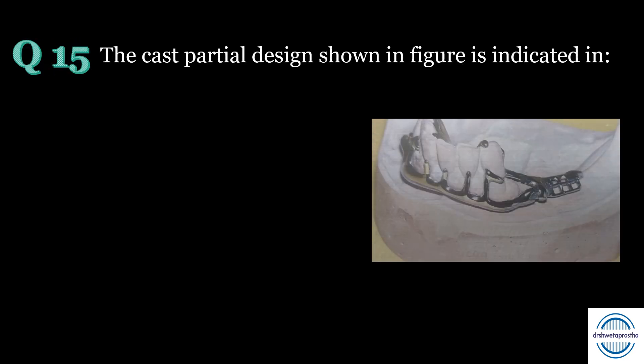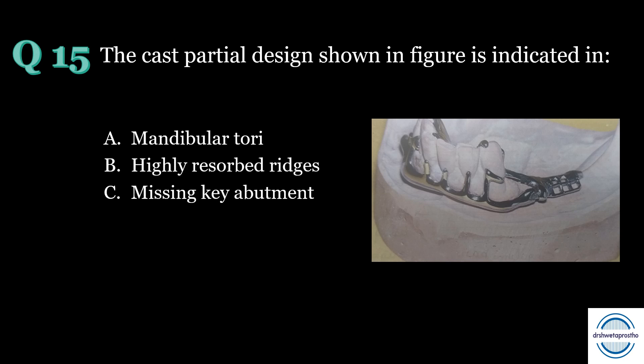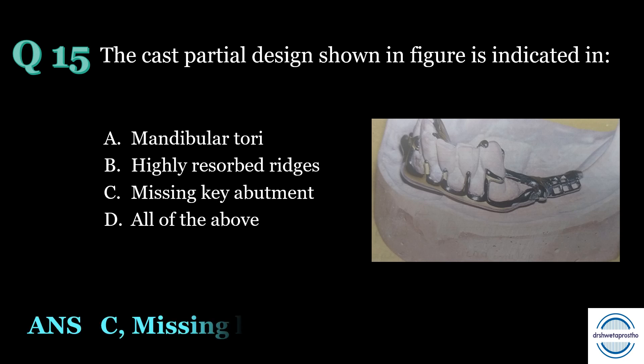Question number fifteen: the cast partial design shown in the figure is indicated in — A. Mandibular tori, B. Highly resorbed ridges, C. Missing key abutment, D. All of the above. The answer is C, missing key abutment. The picture shows a swing lock denture design. It is mainly indicated when key abutments such as premolars and canines are missing, and retention is obtained by engaging the lingual as well as labial surfaces of the remaining anterior teeth.